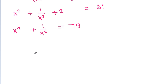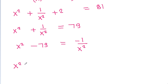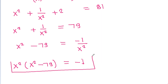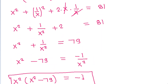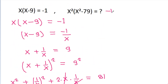And it is x squared minus 79 is equal to minus 1 by x squared. So x squared times (x squared minus 79) will be equal to minus 1.